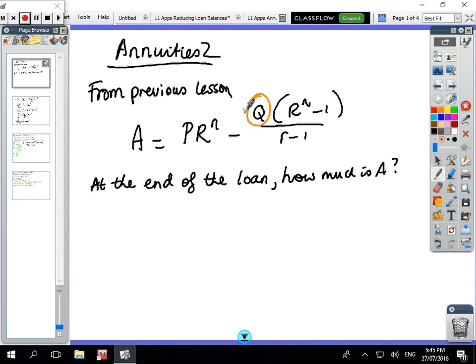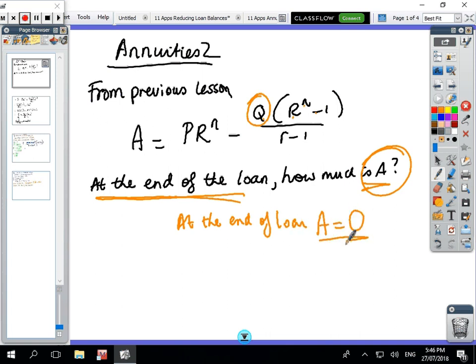In the previous lesson we had a formula: the amount owing was A = PR^n - Q(R^n - 1)/(R - 1). So the question is, at the end of the loan, what's the value of A? If you need to think about it or talk with a friend do that. At the end of the loan, A equals 0. You don't have anything left.